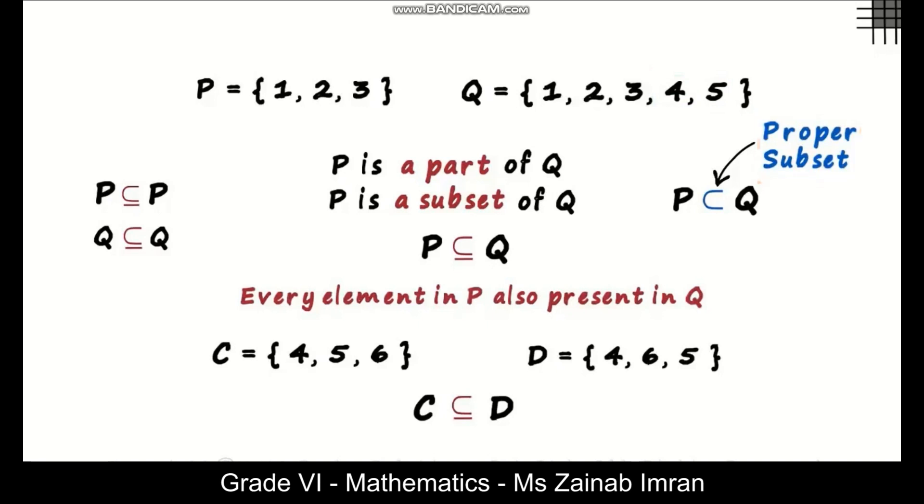Sometimes it is also referred to as the strict subset. Can we say C is a proper subset of D? Think about it. That would be incorrect since there is no element in D which is not a part of C. There has to be at least one such element. That's the only difference between a subset and a proper subset.